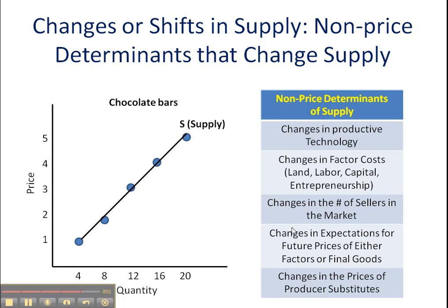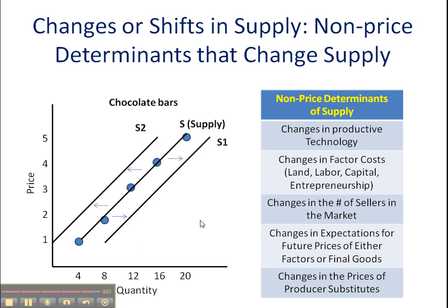You're going to be looking at a number of these variables and have a lot of practice changing them. When supply increases, that is simply a right shift in the supply curve — an increase from S to S1. At every single price level, I have increased the amount that producers are supplying. A decrease in supply is a left shift from S to S2 — at every single price level, I have decreased the amount firms are willing to supply to the market. This is a very simple procedure — I hope that makes sense, and we'll see you soon.